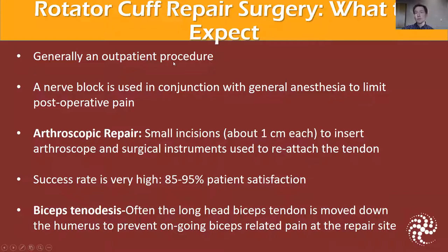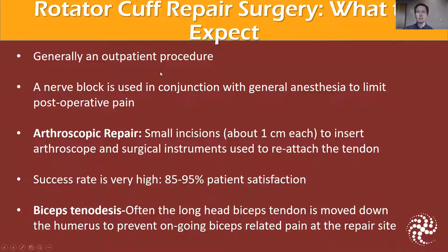This surgery as an arthroscopic procedure is generally an outpatient surgery taking two to three hours to complete. A nerve block is usually used along with general anesthesia — so patients are asleep — and the nerve block numbs up the nerves going to the arm, decreasing significant pain for about 24 hours, helping patients feel more comfortable when waking up and going home. Arthroscopic repair uses usually five to six small incisions — poke holes around the shoulder — through which we place anchors and use our instruments and the arthroscope to look around the shoulder.